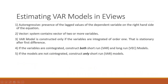The second point is that it's a vector — the system contains a vector of two or more variables. A VAR model is constructed only if the variables are integrated of order 1, that is, they should be stationary at first difference. If the variables are cointegrated, construct both short-run and long-run models — the short run is a VAR model and the long run is a VECM model. If not cointegrated, construct only the short-run model.